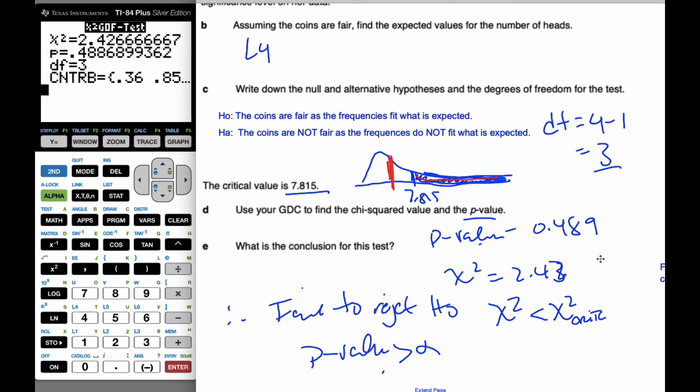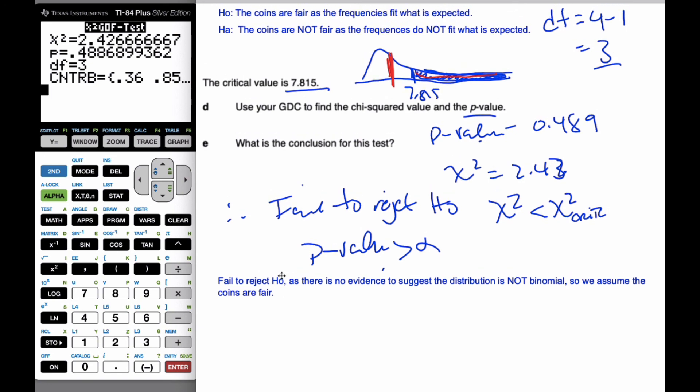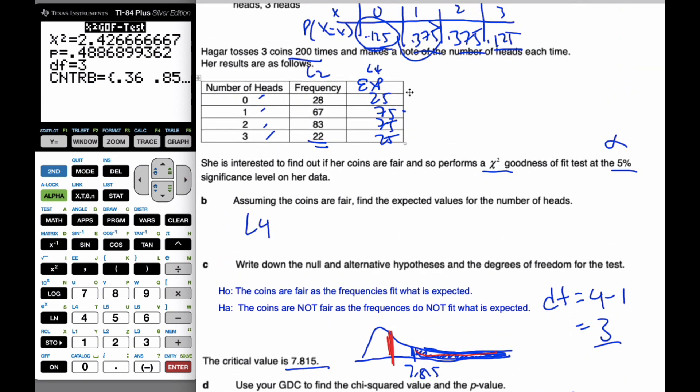And so, my full conclusion is going to be, I failed to reject the null hypothesis, as there's no evidence to suggest the distribution is not binomial. So, we assume the coins are fair, because we're saying that these numbers here are close enough to the expected to say that it is actually binomial.